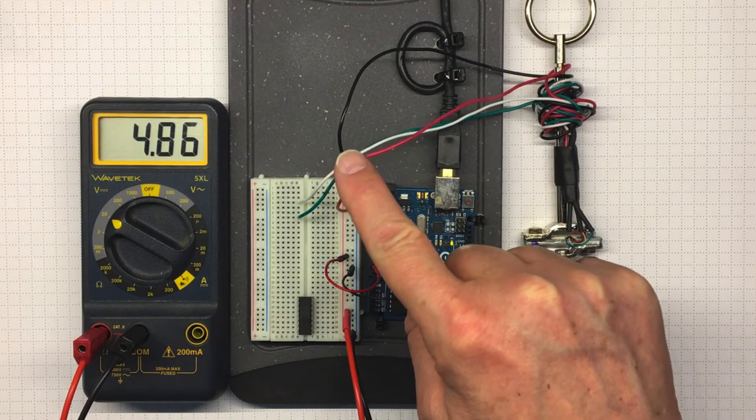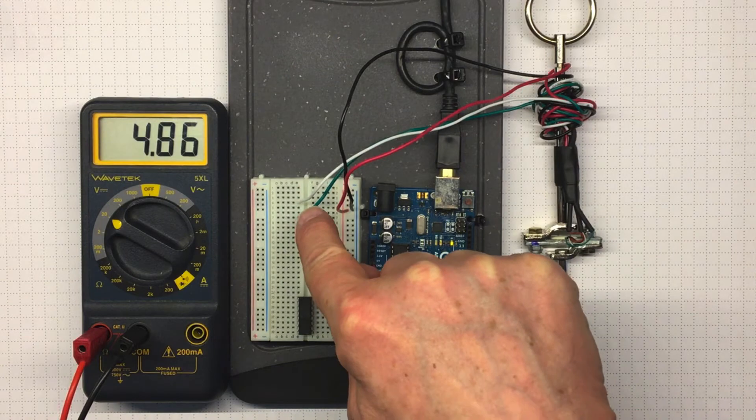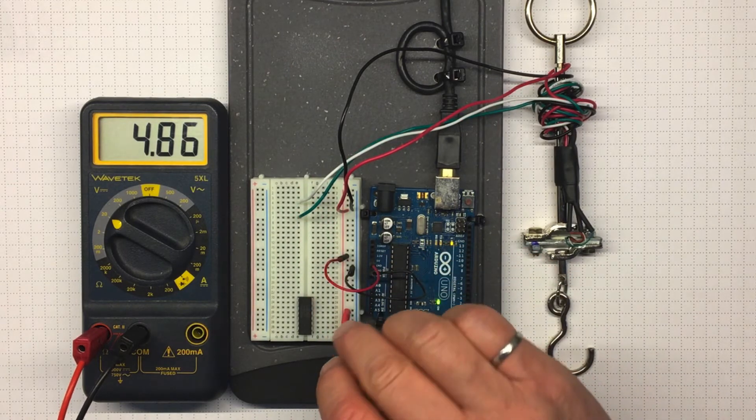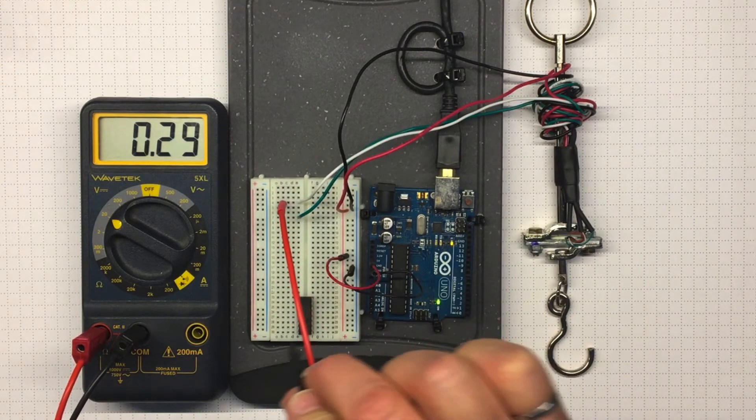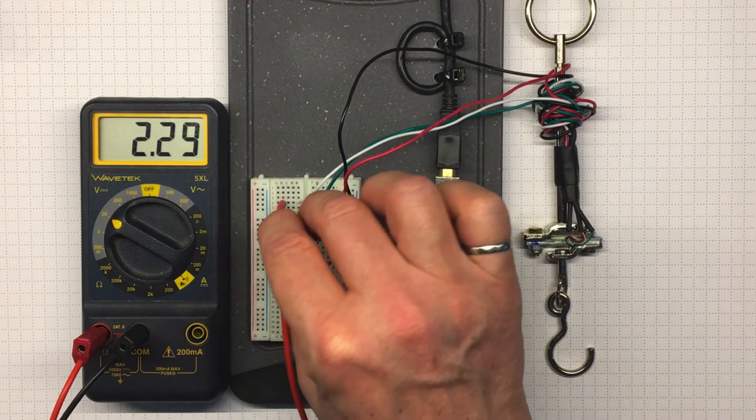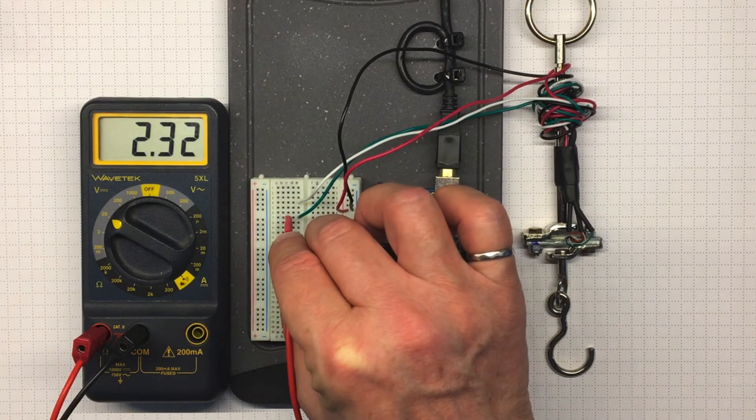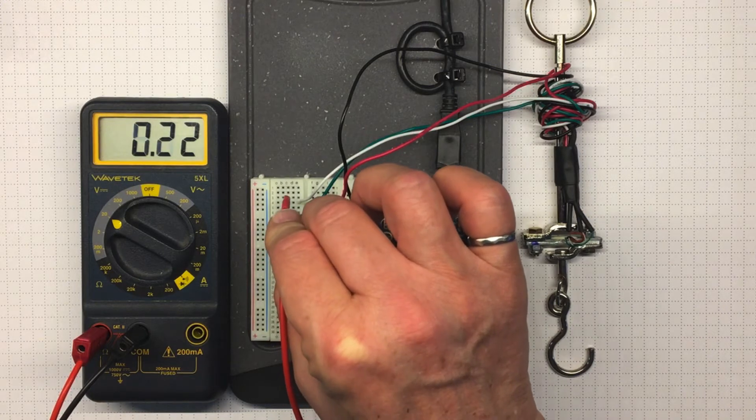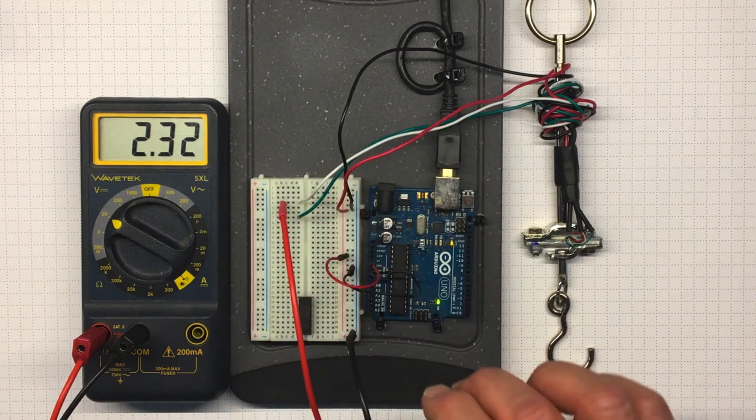So if I've got 4.86 volts DC going out to the load cell, what have I got coming back? Let's measure the absolute voltage on the white wire and the green wire. About 2.3 on each of them. So they're close to, but not exactly the same.